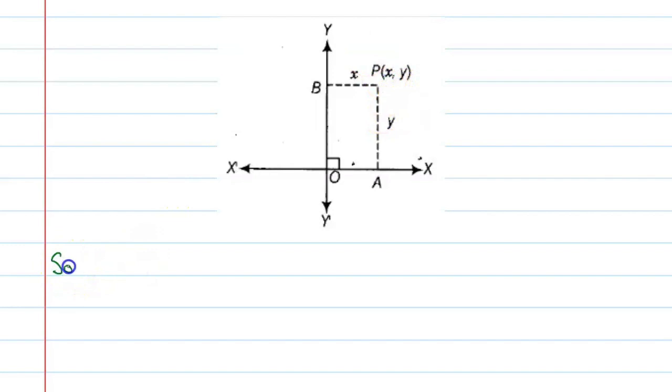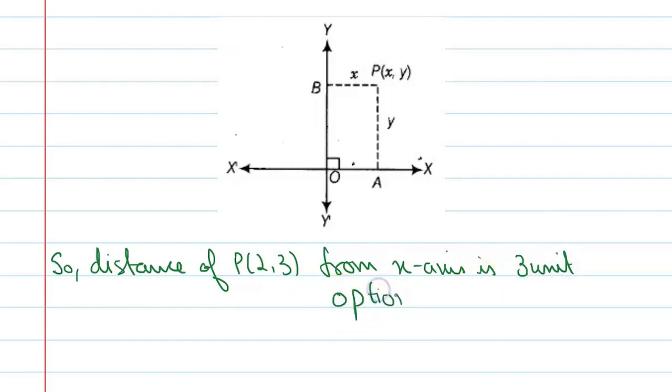So, distance of point P(2, 3) from x-axis is 3 units. And the correct option is B. Alright.